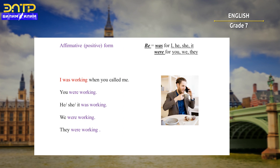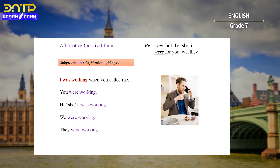Here is the formula for making an affirmative or positive sentence: Subject + to be in past simple + the verb with ING ending + object.